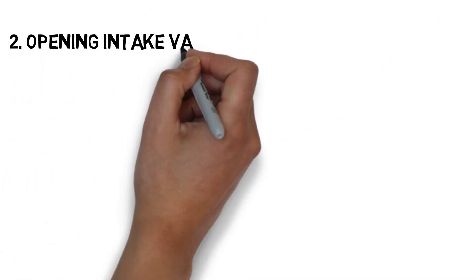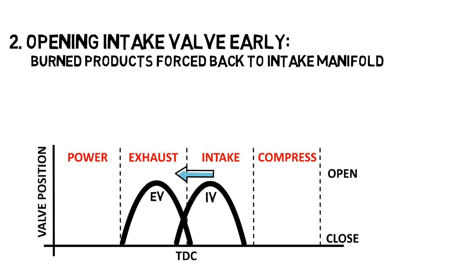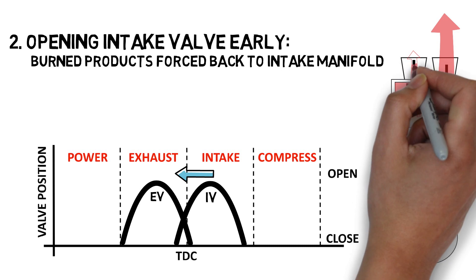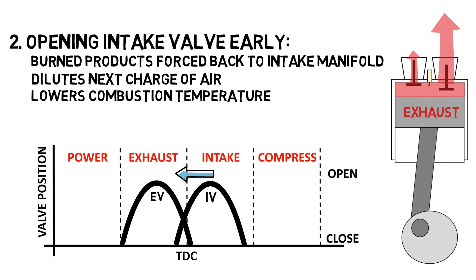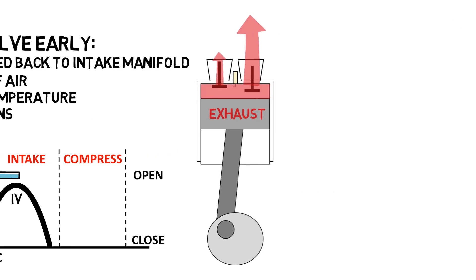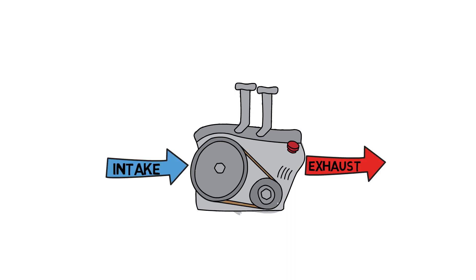If you open the intake valve early, some of the burned products are forced back into the intake manifold during the exhaust stroke. Since you dilute the next charge of air with inert gases, it also results in lower combustion temperature and decreased NOx emissions. This technique has the same effect as vehicles equipped with an exhaust gas recirculation system, or EGR, where the burned gases get rerouted from the exhaust system into the intake manifold through a pipe.